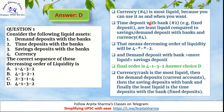Currency is the most liquid because you can use it as and when you want. So options A and C can be eliminated. We are left with B and D. Time deposits with the banks is the least liquid of all, because with a fixed deposit, even if you go to the bank, it will take time — more than demand deposits, which we can demand from the bank as and when needed, or savings deposits.